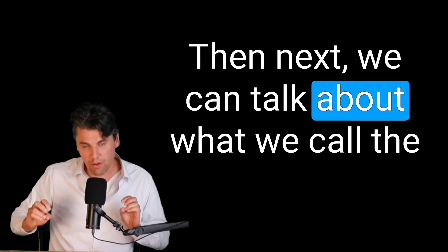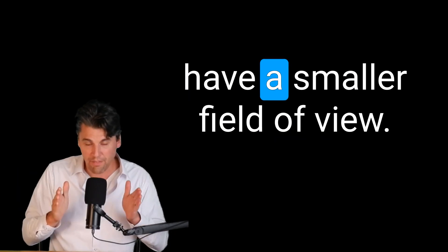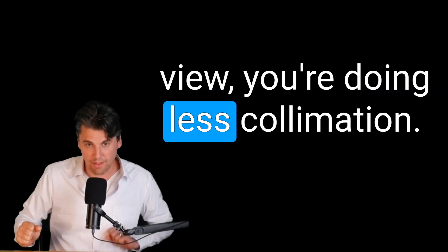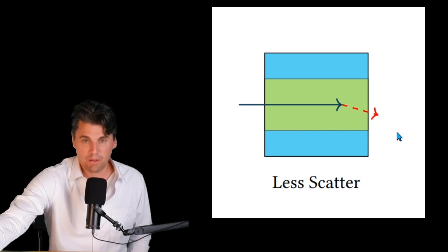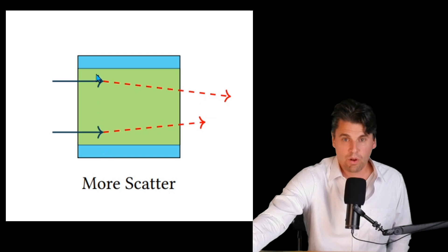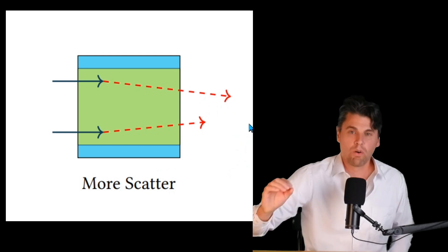Next, we can talk about what we call the field of view or collimation. If you collimate down, you have a smaller field of view. With a wider field of view, you're doing less collimation. As your field of view increases, there's a greater chance for more scatter to interact within the patient and be measured at the image receptor.